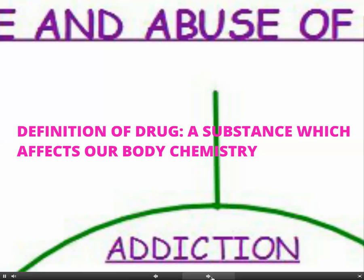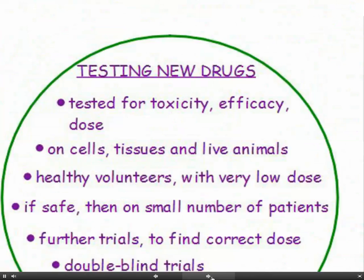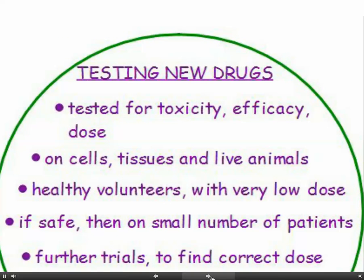The definition of a drug is a substance which affects our body chemistry. So how do we go about testing new drugs? Well, they have to be tested for toxicity — that's whether they are poisonous — for efficacy, which means do they work, so they actually cure the disease, and to find the correct dose.